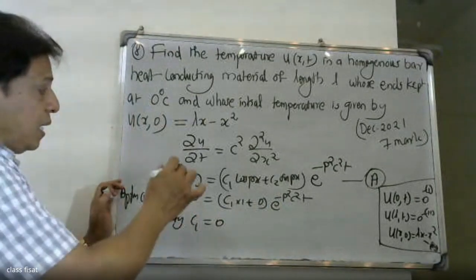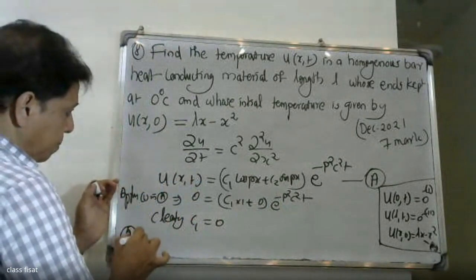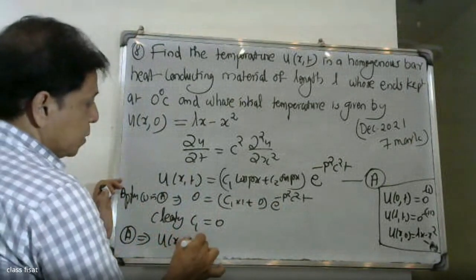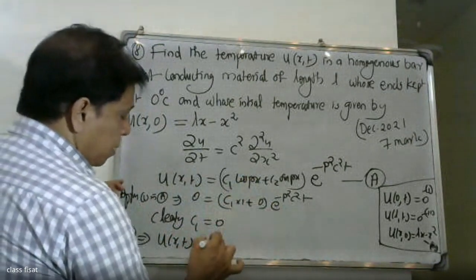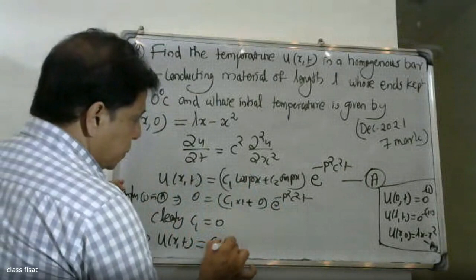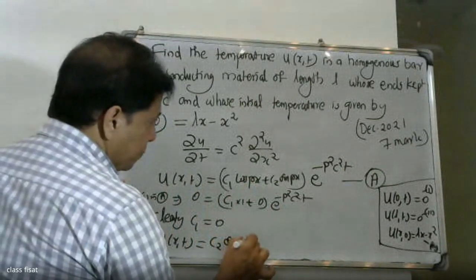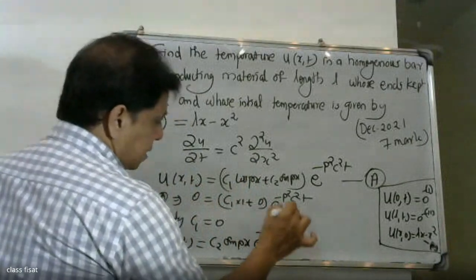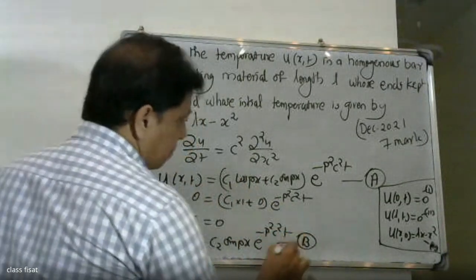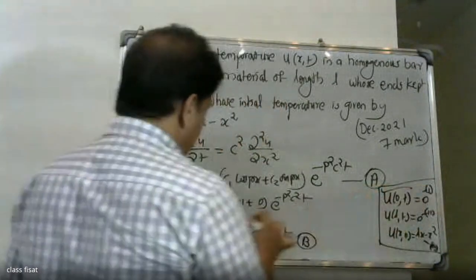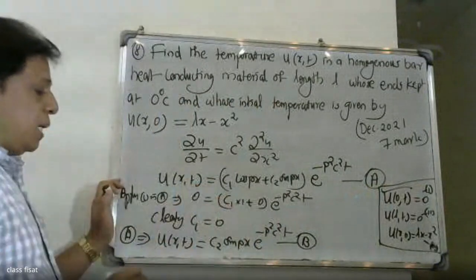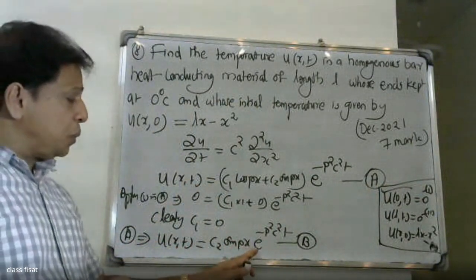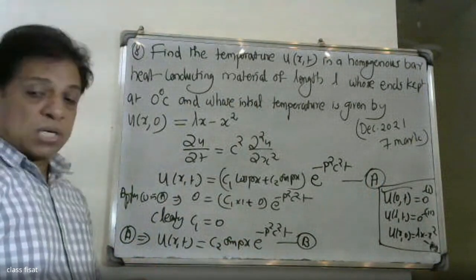Then the equation becomes: u(x,t) = c2·sin(px)·e^(−p²c²t). This is equation B. With c1=0, u(x,t) = c2·sin(px)·e^(−p²c²t).